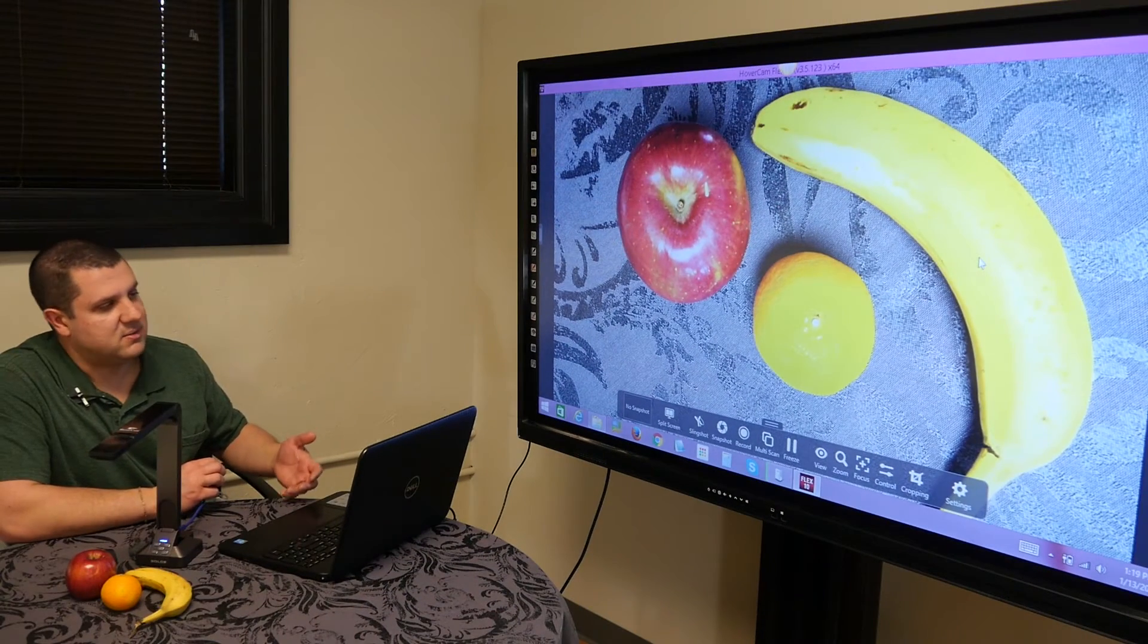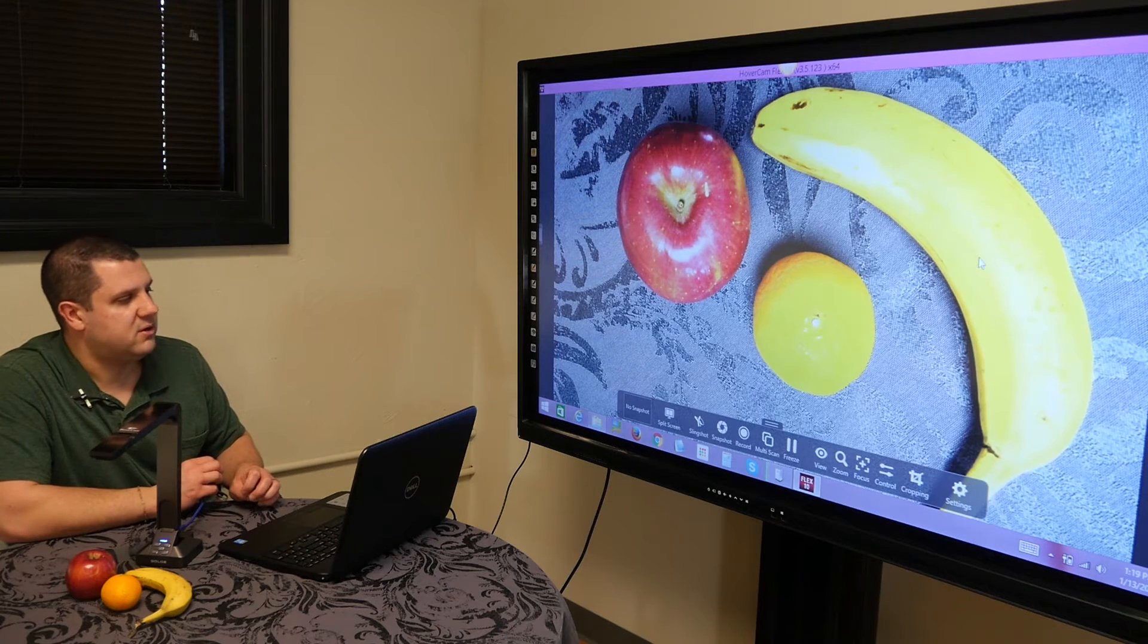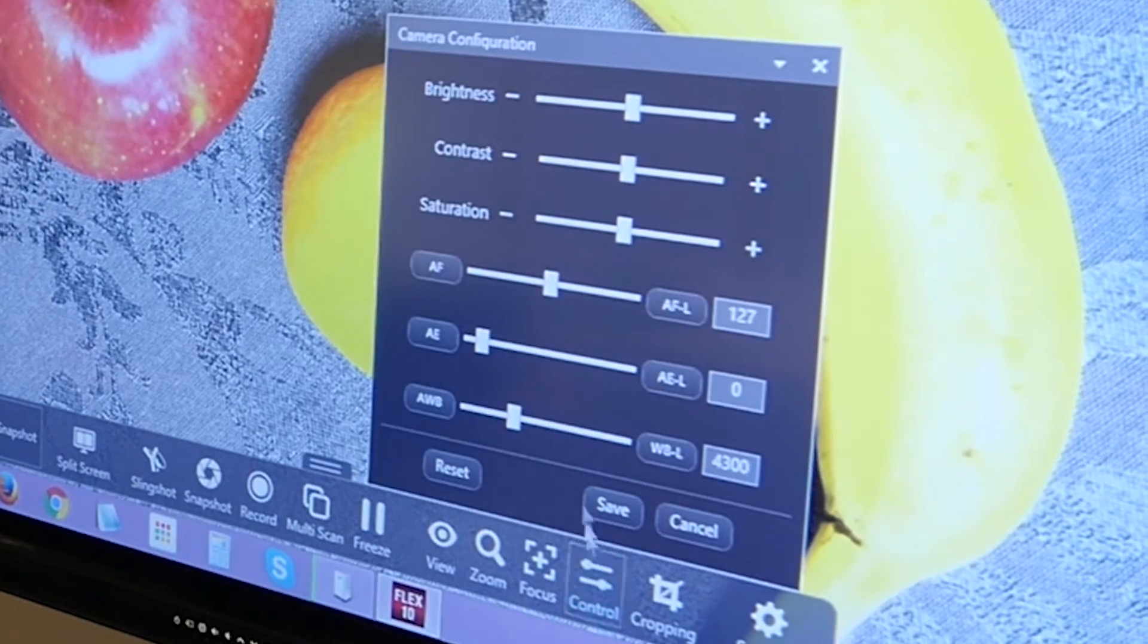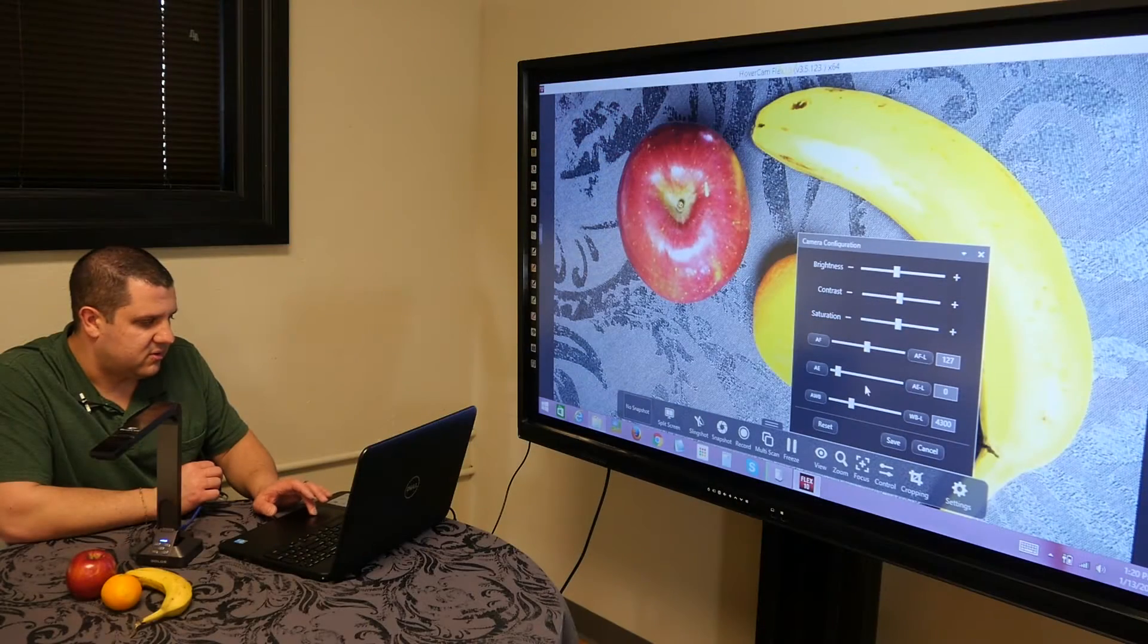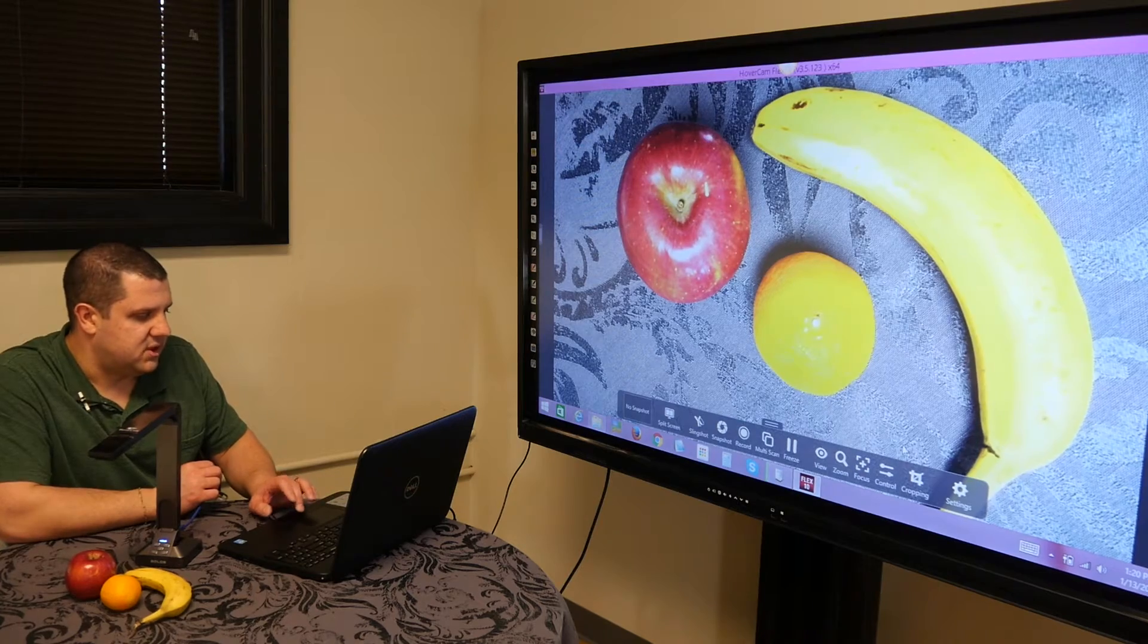We have a couple different tools at the bottom including split screen, a slingshot which lets you put the video into other programs you may be using, especially whiteboard programs. In control, we can adjust some color settings here, turn that brightness down a little bit because it does seem a little bit high. You've got white balance settings you can play with, exposure, autofocus, things like that.